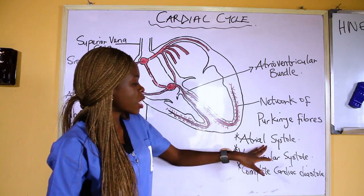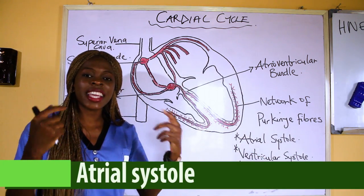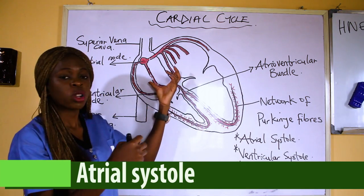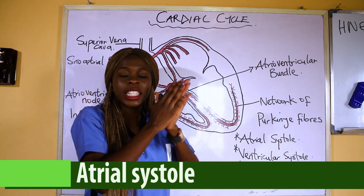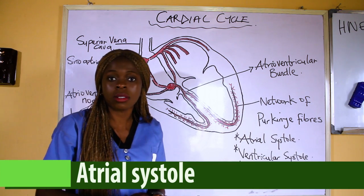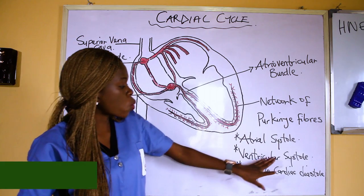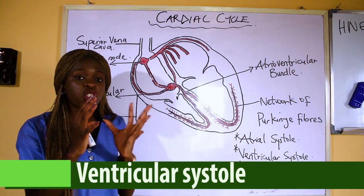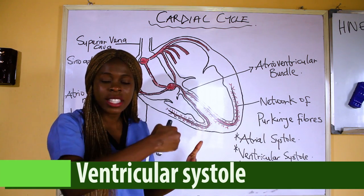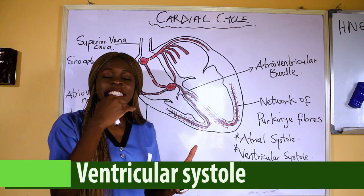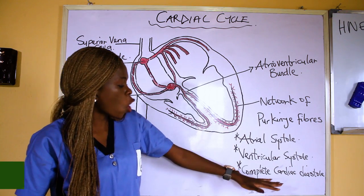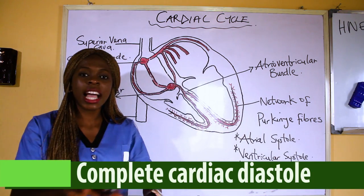First, there is atrial systole, which simply means the contraction of the atrium — the upper chamber of the heart — and the duration for that is 0.1 seconds. Then there is ventricular systole, which is the contraction of the ventricle, the lower chamber of the heart, and the duration for that is 0.3 seconds.